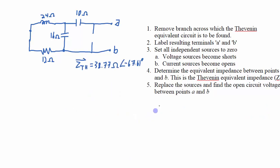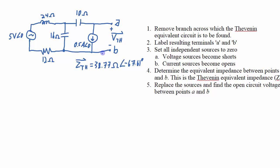Step five: replace the sources and find the open circuit voltage between points A and B. This involves putting the current source back — 0.5 A at 0° — and the voltage source back — 5 V at 0°. I want to find the voltage between those two points with the sources back in place; that will be my Thevenin equivalent voltage. The simplest way to find it is to use the superposition principle: look at the voltage between A and B due to just the current source, then due to just the voltage source, then add them together.